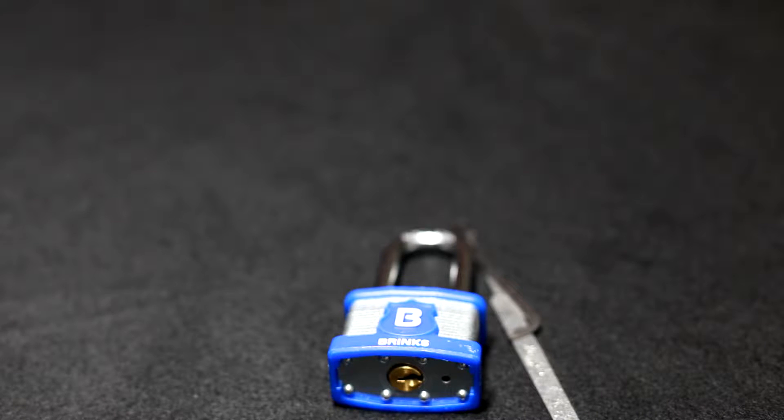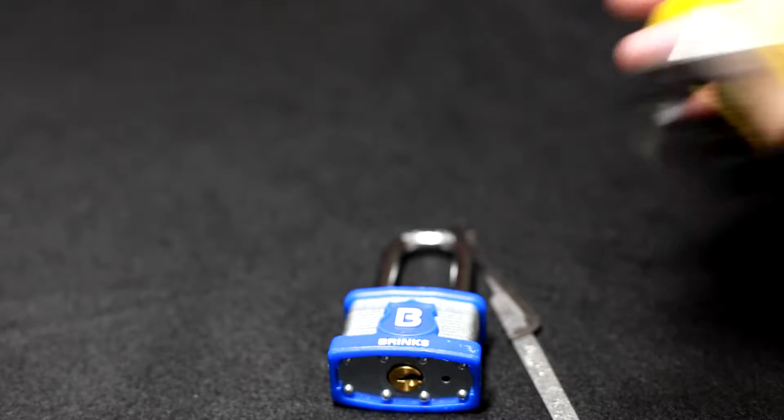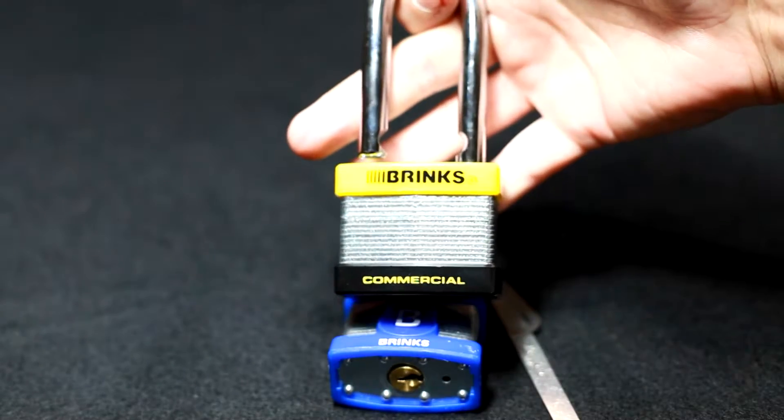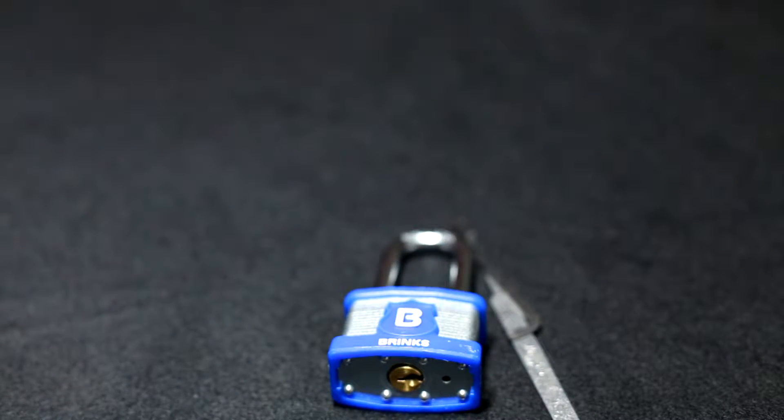All right, so now we have a Brinks residential lock. It's the smaller brother to the Brinks commercial lock. The Brinks residential lock is also a four pin lock. Pretty sure that only two of them are security pins, more than likely spools.